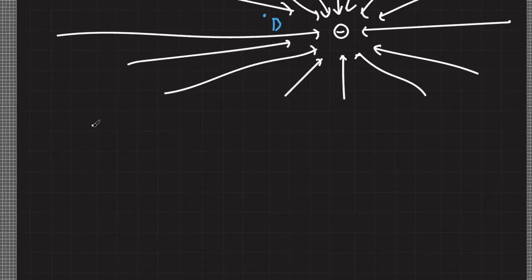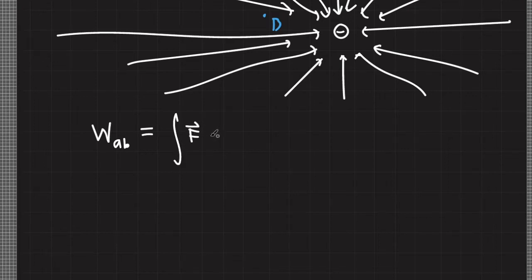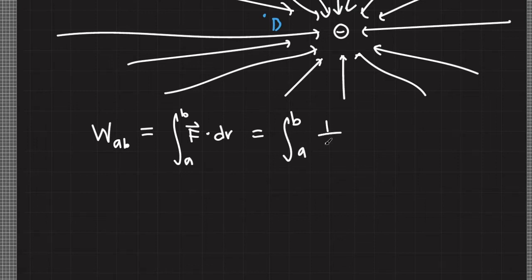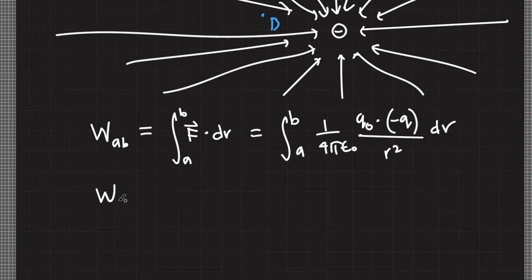The work done by the electric force from point A to point B on our test charge is equal to the dot product of the electrostatic force times displacement, evaluated from point A to point B. From Coulomb's law, electrostatic force is equal to 1 over 4π epsilon naught, times our test charge times the source charge divided by R squared, dr. Moving all the constants out from the integral sign, we proceed with the evaluation.